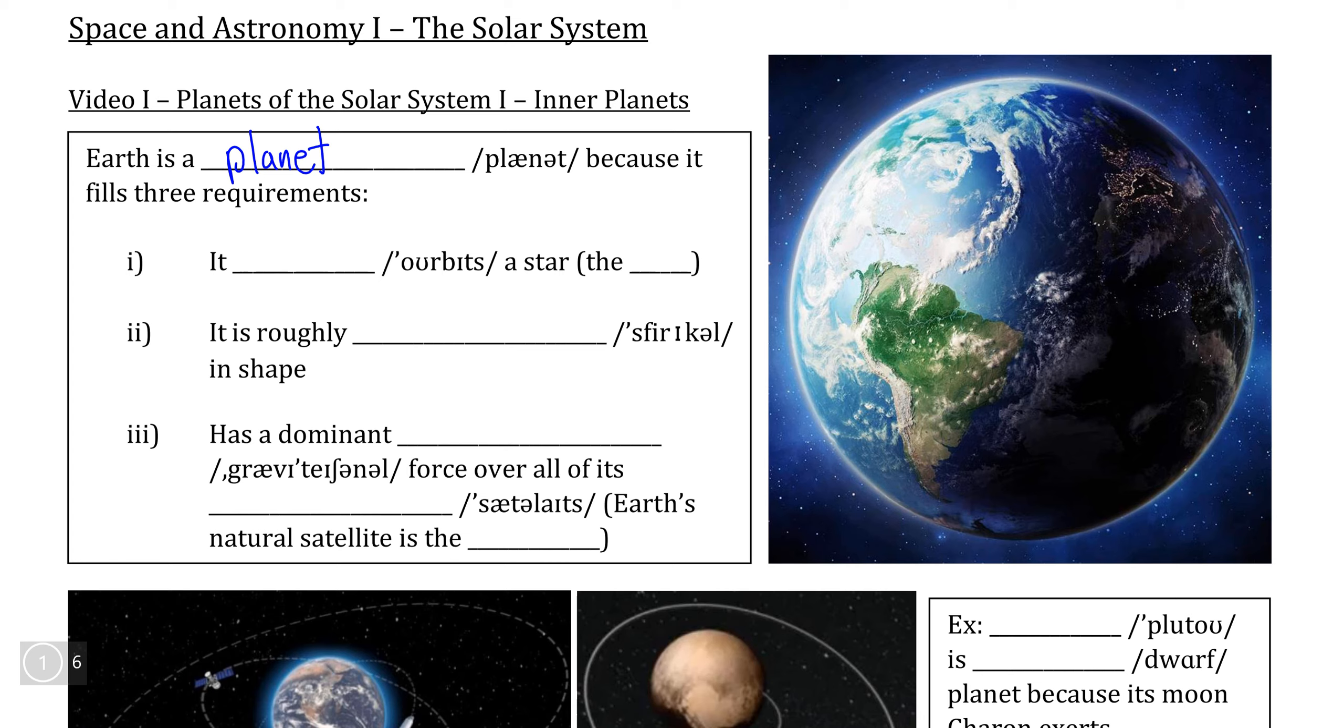So if we take a look at Earth, for example, it fulfills the three characteristics that are required to be a planet, starting with the fact that it orbits around a star, and of course the star that is central to our solar system is the sun. The second characteristic describes the shape of a planet. We can see that this picture of the Earth shows the Earth to be circular, but because we know the Earth is in fact 3D, we can say that one requirement of planets is that they are roughly spherical in shape.